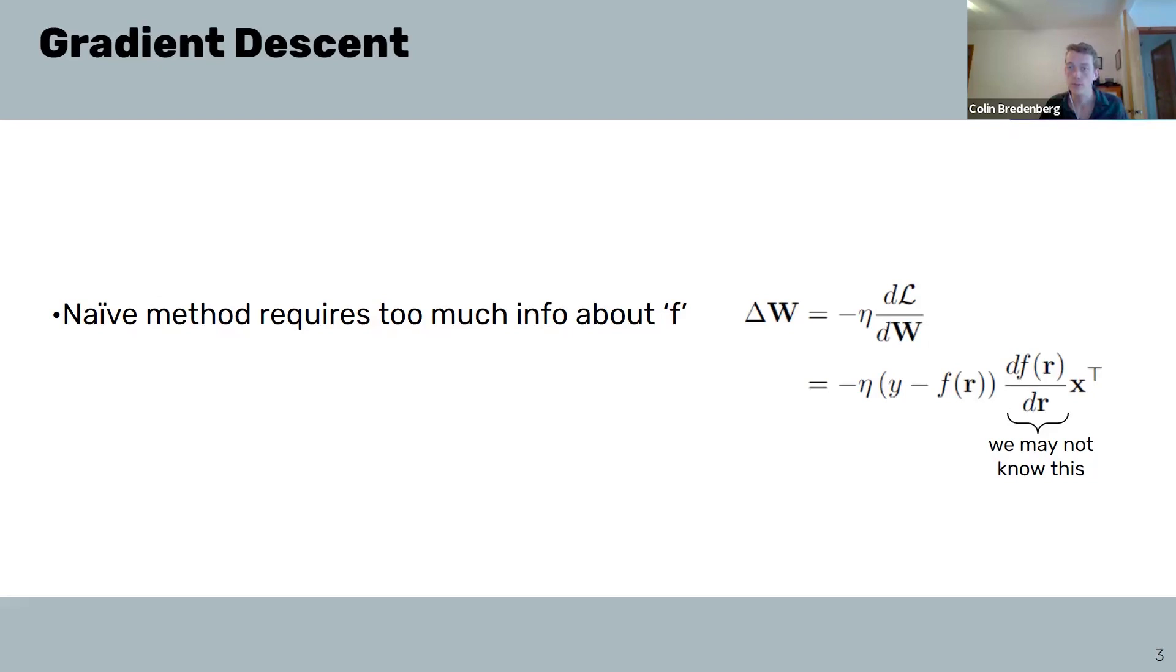But before we get into those details, we can first ask, can we approximate the gradient of our loss function in other ways that use information that's more likely to be available to the systems?